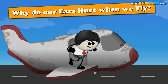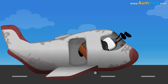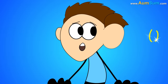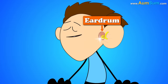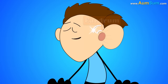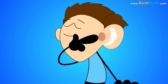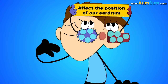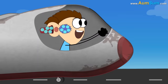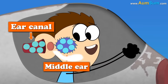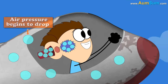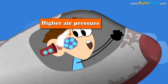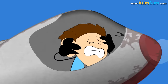Why do our ears hurt when we fly? When sound waves enter our ear, they make our eardrum vibrate and are eventually interpreted as sounds by our brain. Our eardrum is located between the ear canal and the middle ear. The air present in both these areas can affect the position of our eardrum. Before we take off, the air pressure in the ear canal and the middle ear is the same. When the flight begins to take off, the air pressure in the airplane and thus the ear canal begins to drop. Due to higher air pressure in the middle ear, our eardrum is pushed outwards, causing us pain.